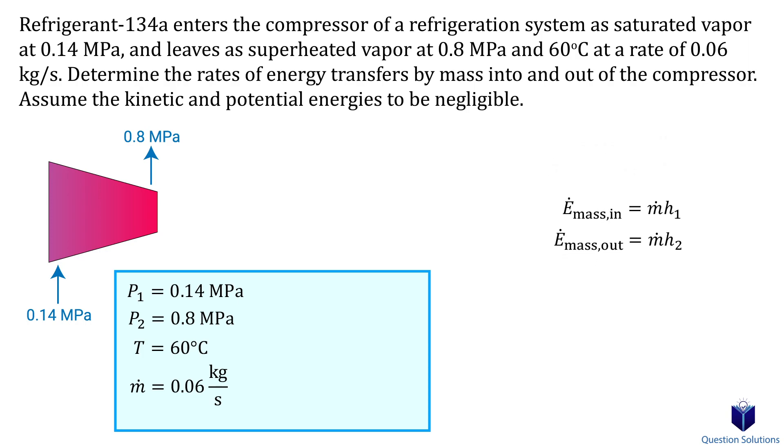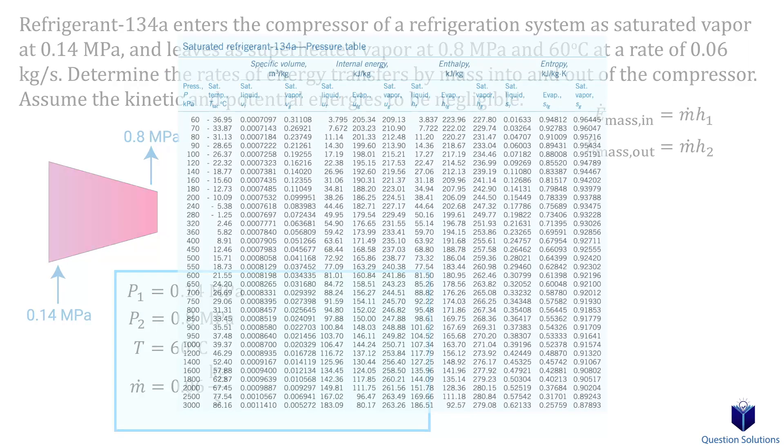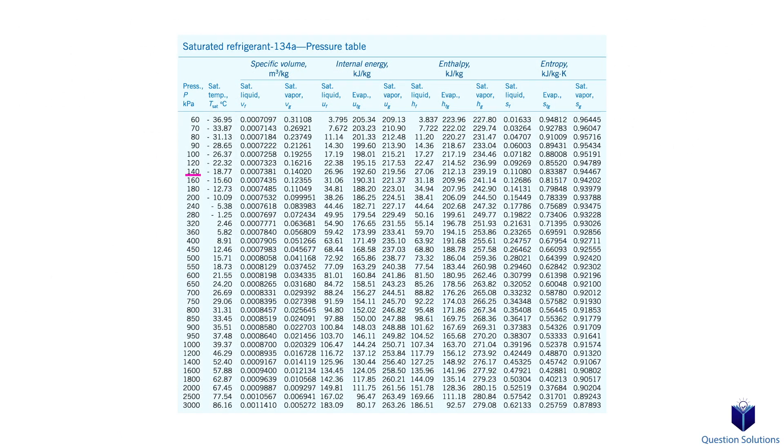So let's replace θ with it. With the given values, we can look up the enthalpy values using a table. For the initial enthalpy, we're told that it's a saturated vapor with a pressure of 0.14 MPa—our value is right here.